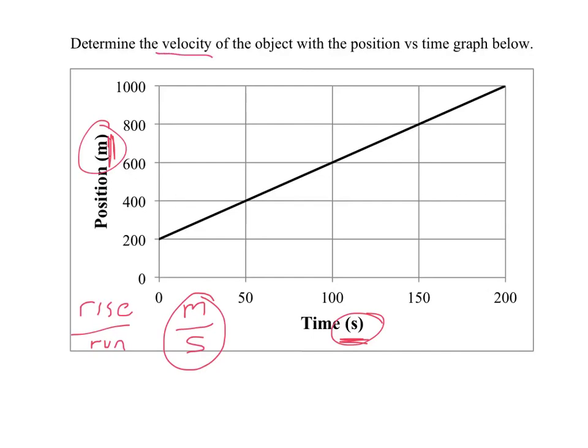Now it wants us to find the velocity of this object. The key thing to notice is the slope is never changing, so it has a constant velocity. We just have to figure out what it is. To find the slope of this line, pick any two points on the line.